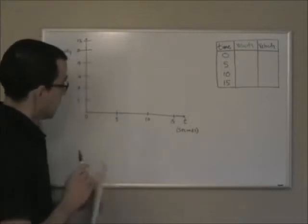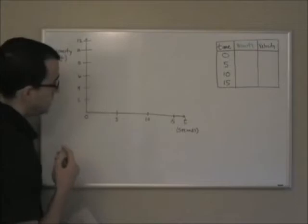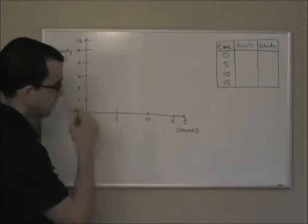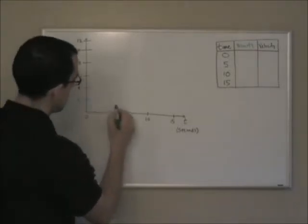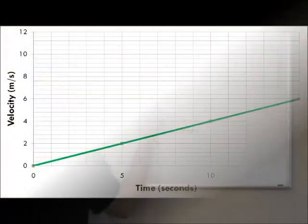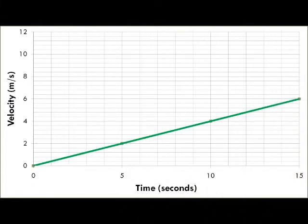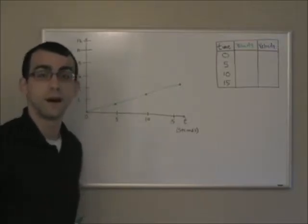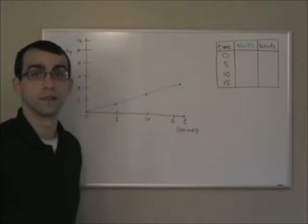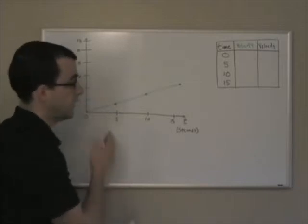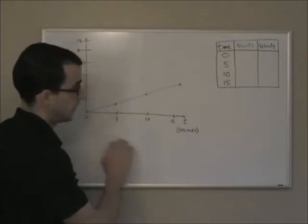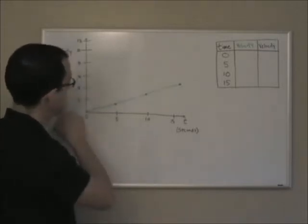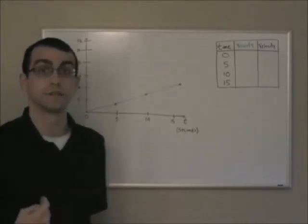If we plot an object's velocity with respect to time for constant acceleration, it looks like this — a straight line. That's going to be common with all objects with constant acceleration. Any object with constant acceleration on a time versus velocity plot will produce a straight line.